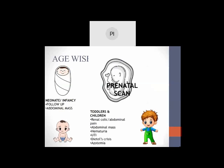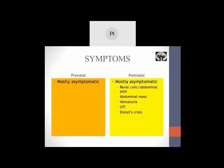Later in infancy and childhood, children on evaluation of urinary tract infection or presenting with hematuria and pain are also evaluated and found to have UPJO. The rarest or most dangerous form is when there is evaluation of azotemia in an elderly or older child and UPJO is detected. Age-wise presentation: the commonest in neonates is follow-up of a prenatal scan followed by classical abdominal mass. Toddlers and children may present with renal colic, abdominal mass, hematuria, urinary tract infection, and Dietl's crisis.